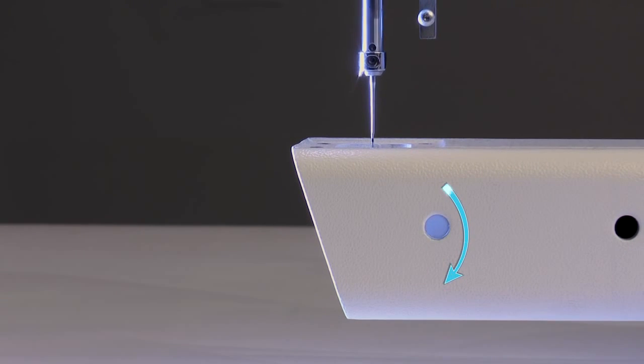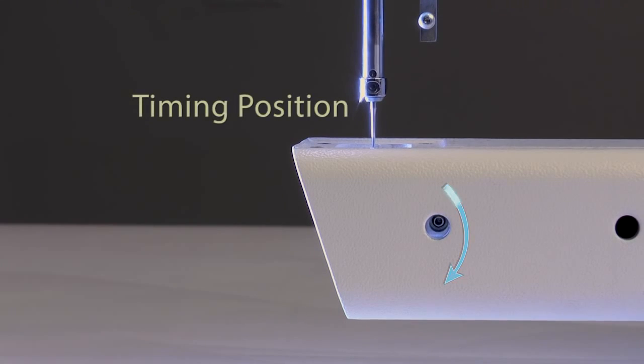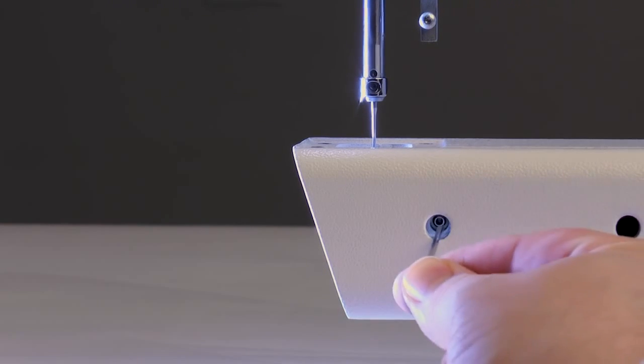Rotate the hand wheel again to the last set screw, and the needle should now be in position next to the hook. Now loosen the last set screw.